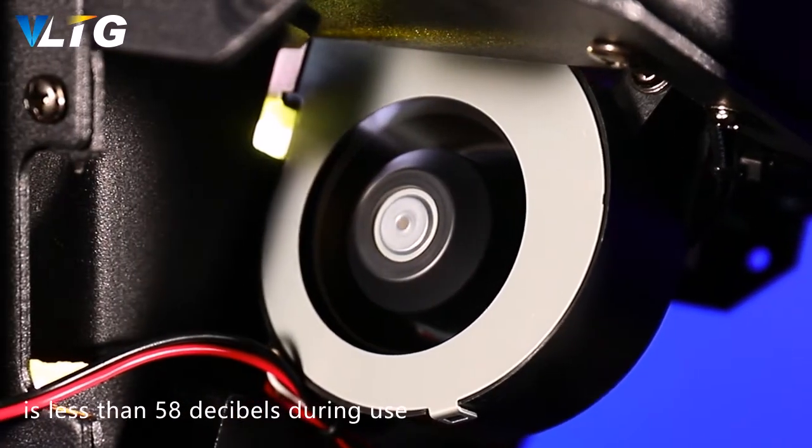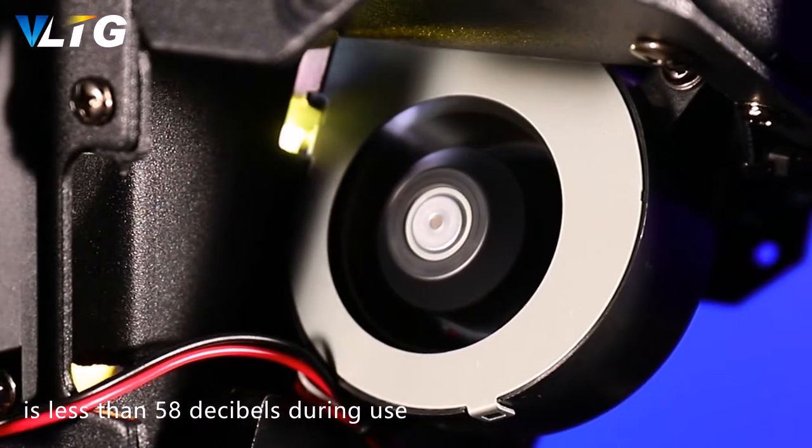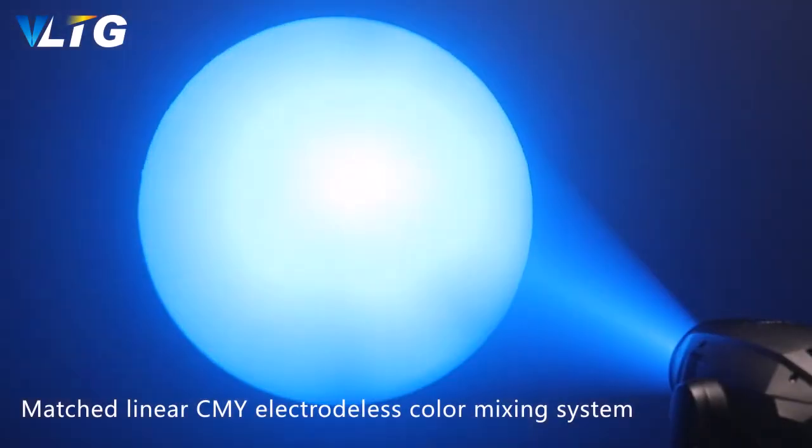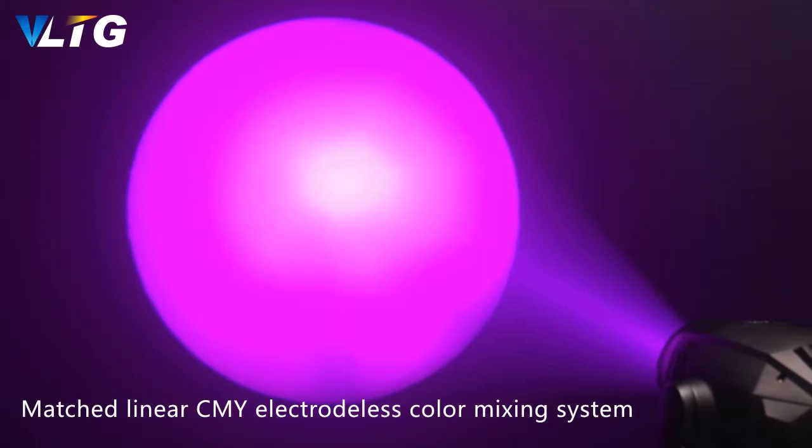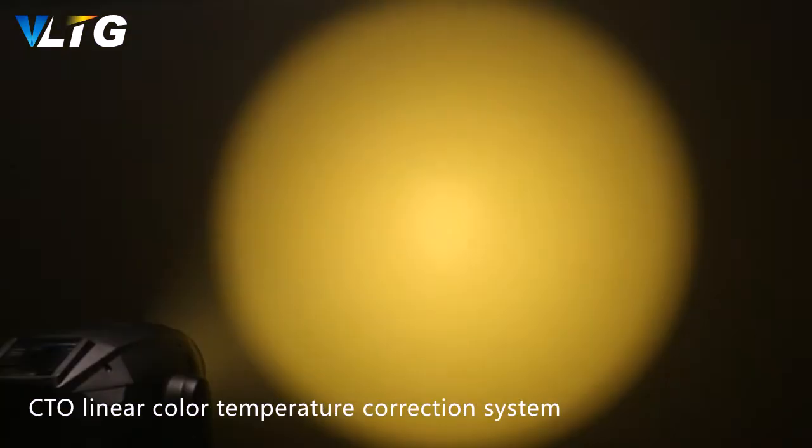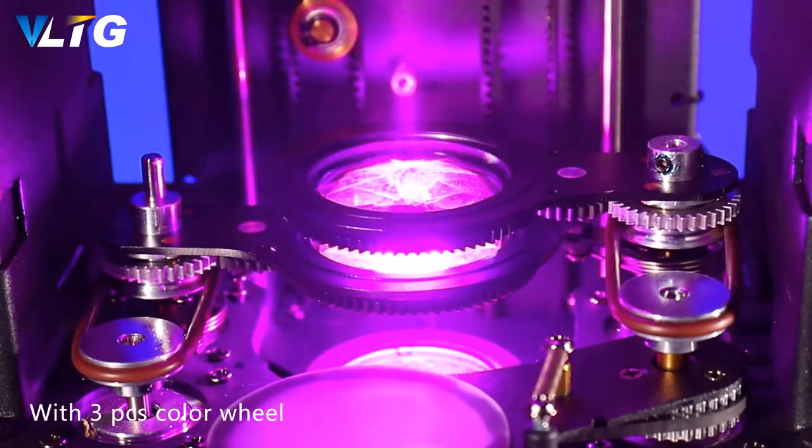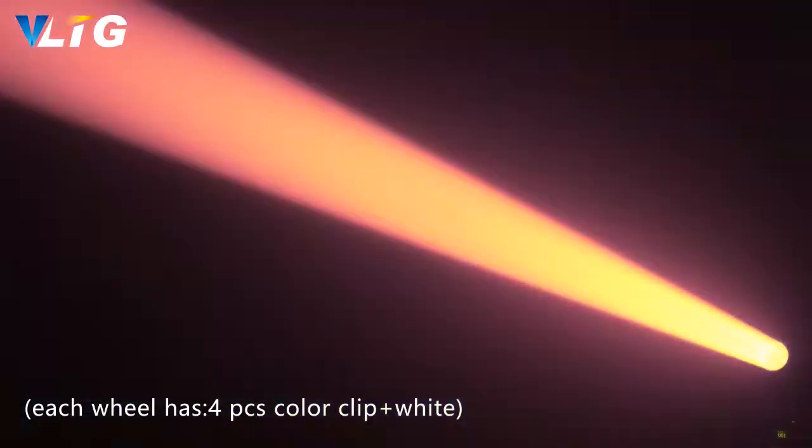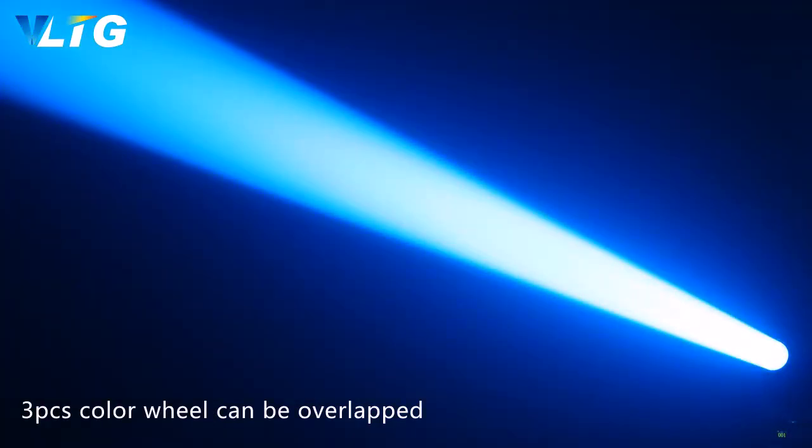The noise of the lamp is less than 58 dB during use. Match Linear CMY Electroless Color Mixing System plus CTO Linear Color Temperature Correction System with three-piece color wheel, each wheel has four-piece color clip plus white. Three-piece color wheel can be overlapped.